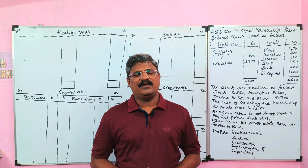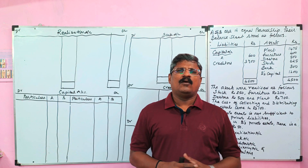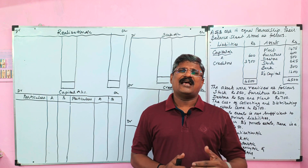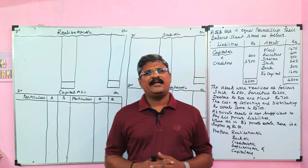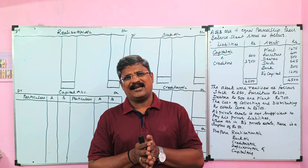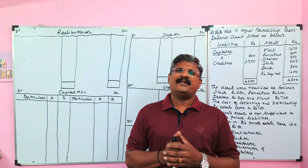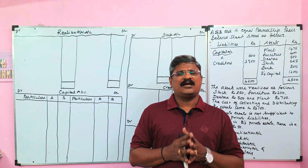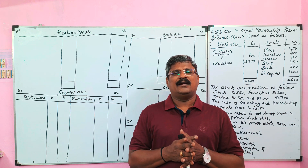Today we are going to solve a problem in relation to insolvency of all partners. Here all partners are insolvent, which means the firm is unable to repay its external liabilities — creditor, bills payable, and bank loan. In this problem there is only one external liability: creditor. When a firm is unable to repay its business debt, we call it insolvency of all partners. We have to prepare a realization account, bank account, creditor account, capital account, and deficiency account.